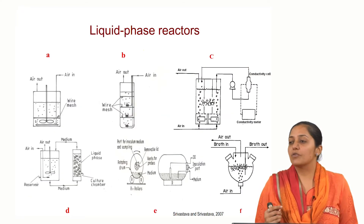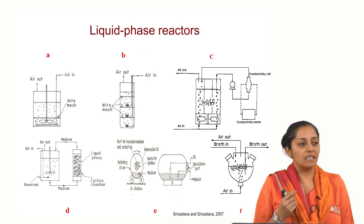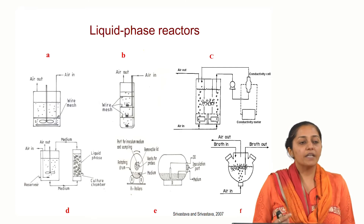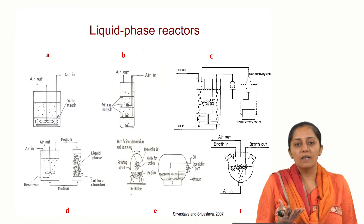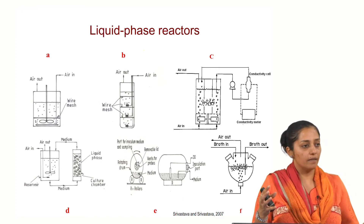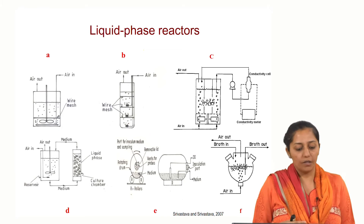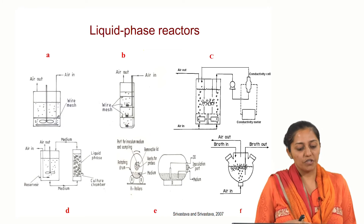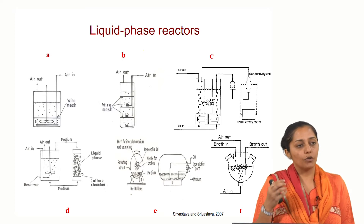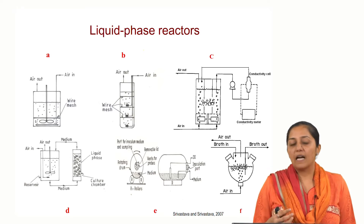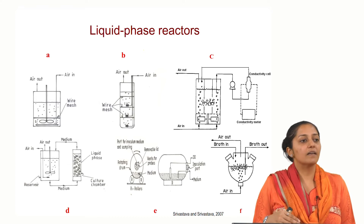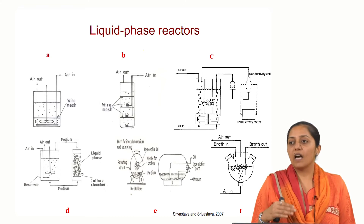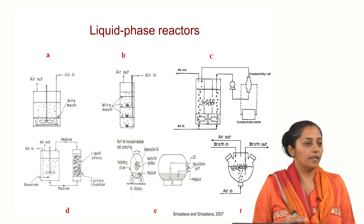Generally, because root cultures are self-immobilizing they need a support. So even in these liquid phase reactors a support is provided to facilitate self-immobilization of the hairy roots. You can see in picture A, which is a stirred tank reactor, there is a mesh provided onto which inoculation is done, and the impeller is kept below the mesh such that it cannot generate large shear forces on the inoculated roots.